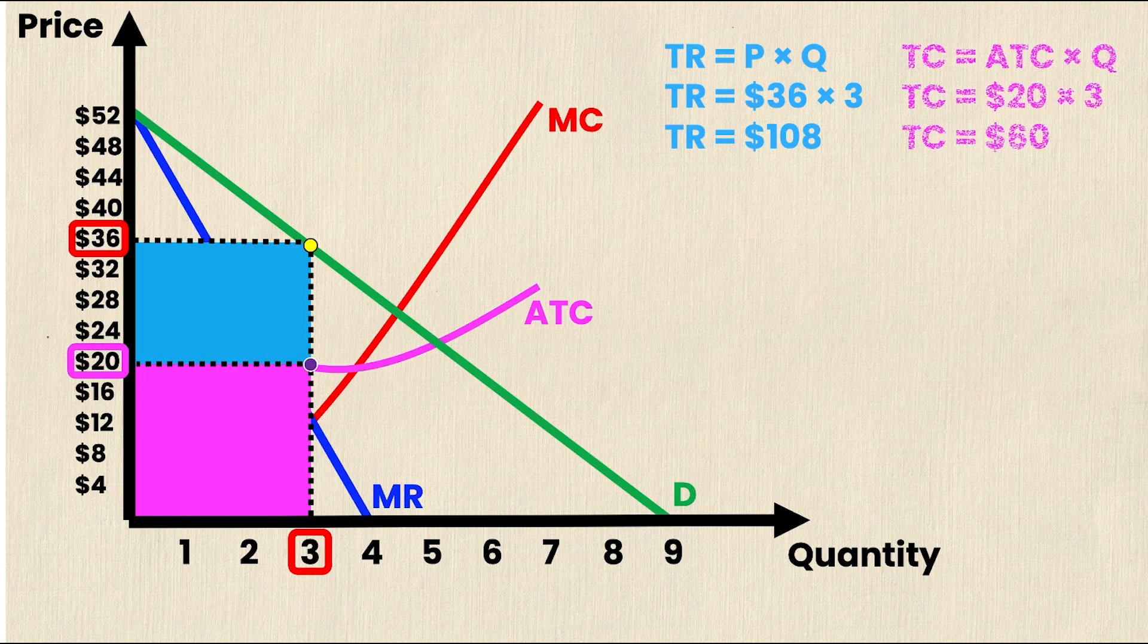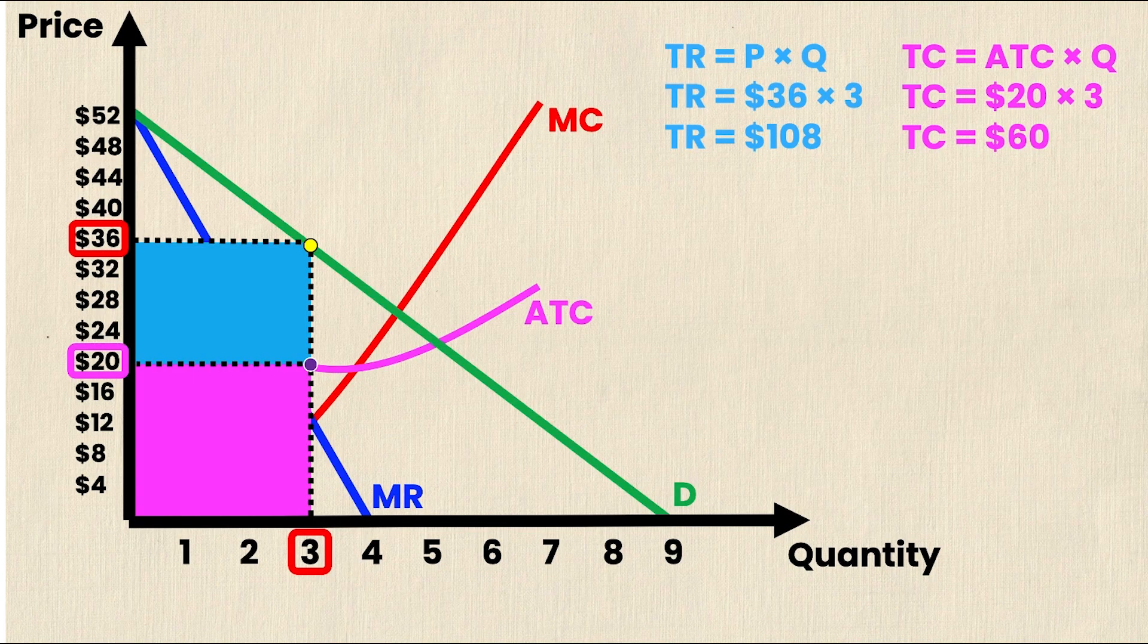Now as a reminder, total cost is equal to the average total cost times quantity. Total cost is equal to 20 times 3. And of course, some simple algebra says that total cost is equal to $60. And that's simply the area of the pink rectangle. But that's not what we're interested in.